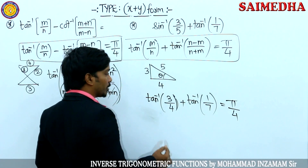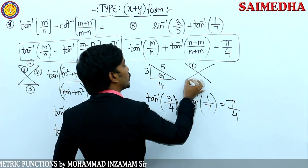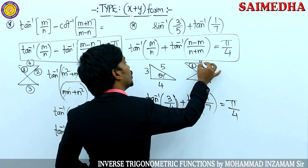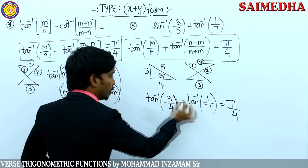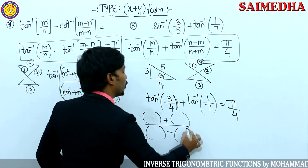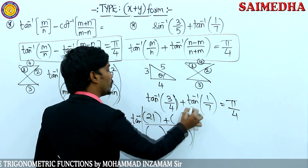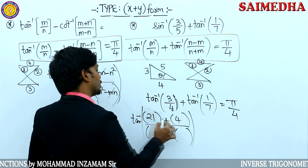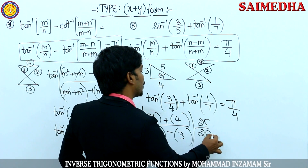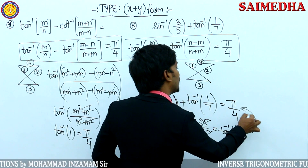Let us try the shortcut method. The shortcut: denominator multiplied by numerator, denominator multiplied by denominator, numerator multiplied by numerator. Directly: 7 × 3 = 21, 4 × 1 = 4, 7 × 4 = 28, 3 × 1 = 3. So numerator: 21 + 4 = 25; denominator: 28 minus 3 = 25. Cancel — gives 1. Tan inverse of 1 equals π/4.